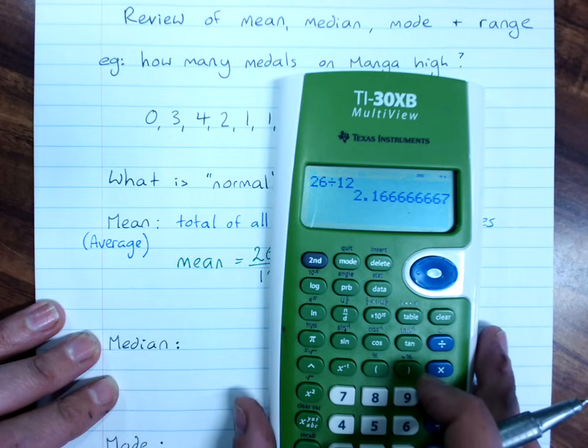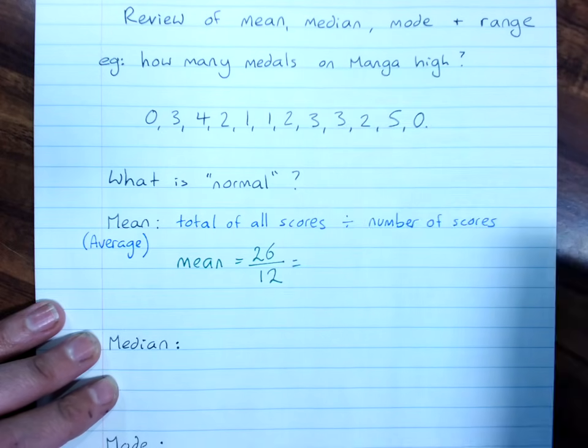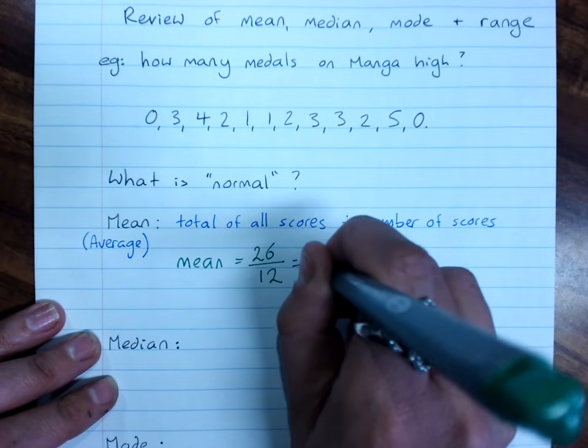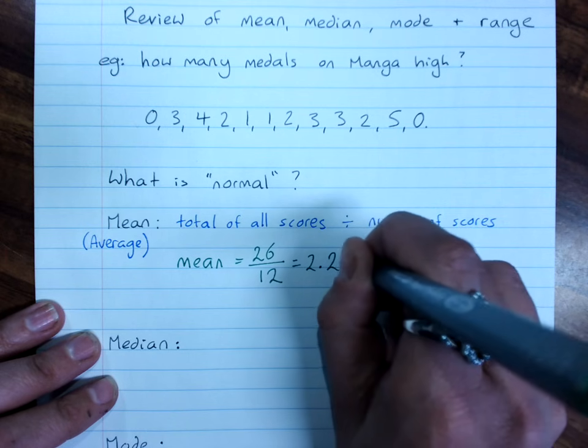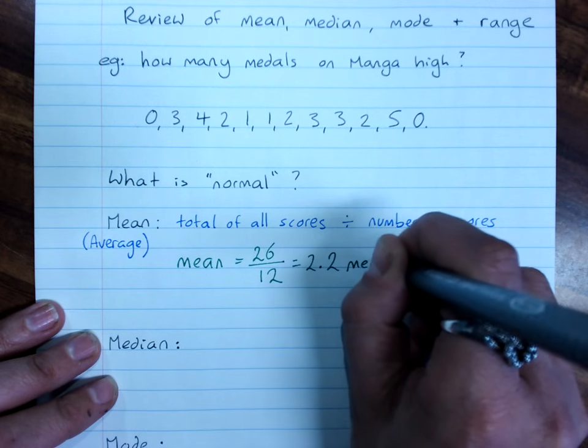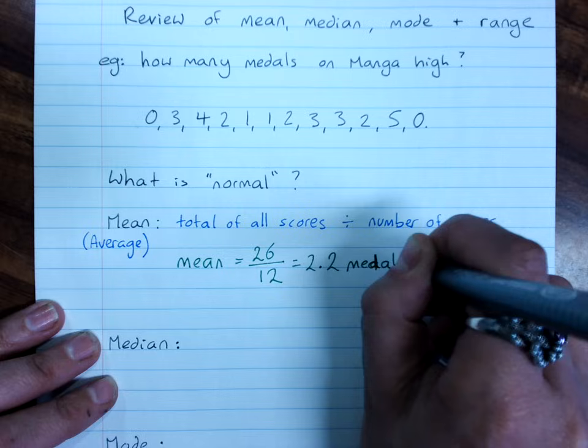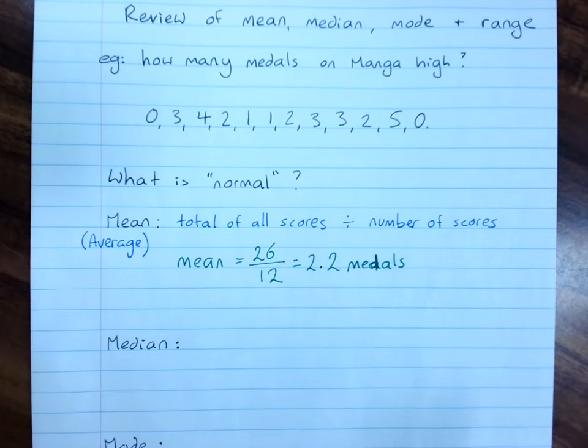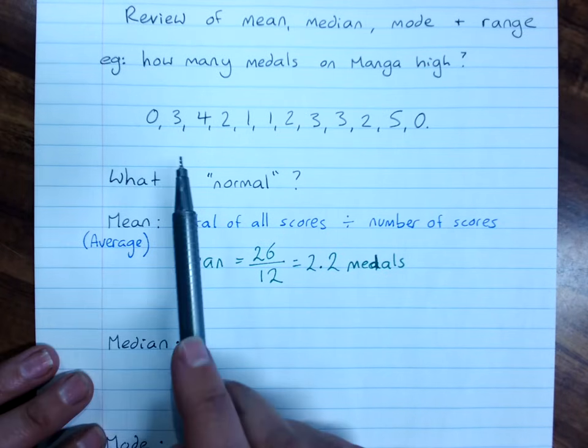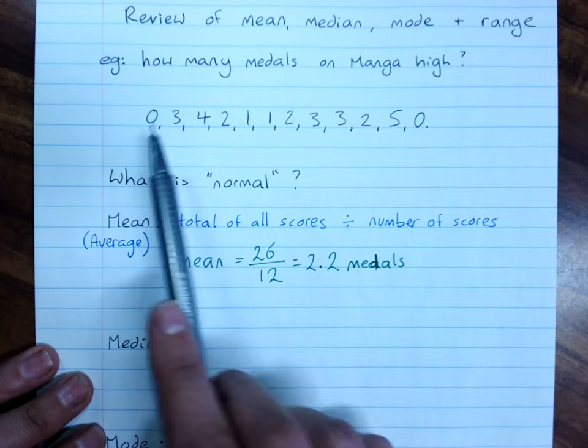And 26 divided by 12, 2.1666. So let's make that 2.2. And that was medals. So we say 2.2 medals was average, was the mean. So this person was above average, and these people here were below average.